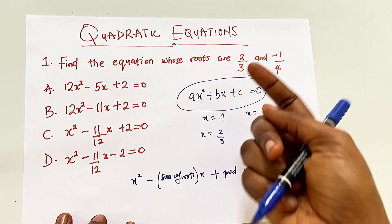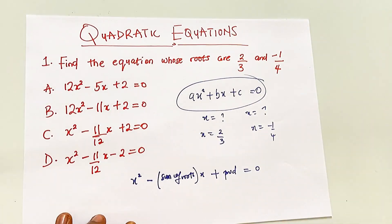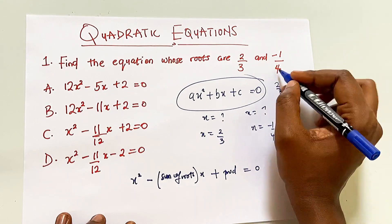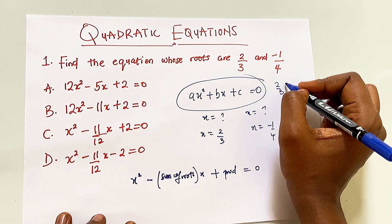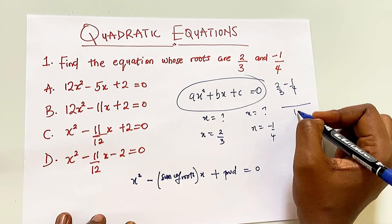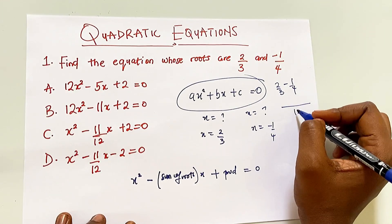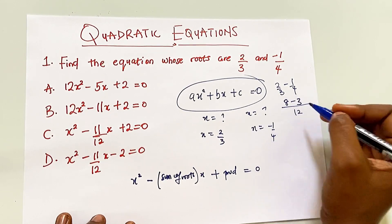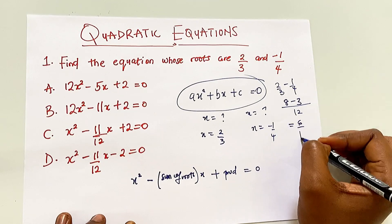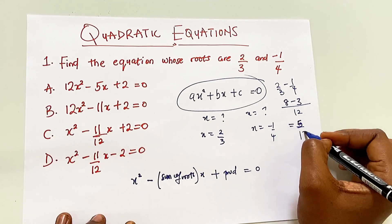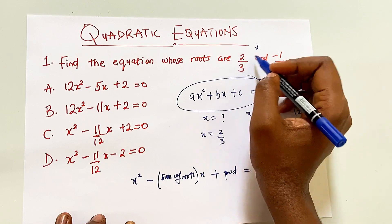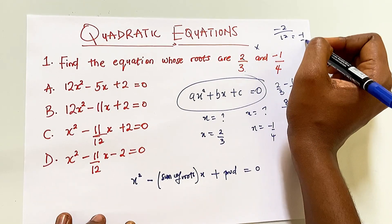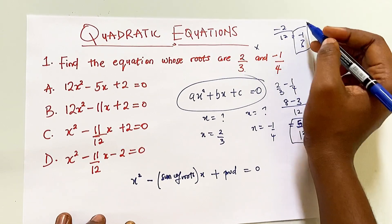What you need to do is find the sum of these values, find the product, and insert them into the equation. The sum of 2/3 and -1/4 is like saying 2/3 minus 1/4. The LCM is 12. 3 into 12 is 4, times 2 is 8. 4 into 12 is 3, times 1 is 3. So you get 5/12. For the product: multiply the numerators to get -2, multiply the denominators to get 12, which gives -1/6.